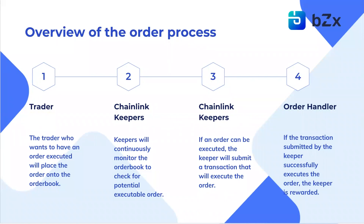At every single order, if one of them is up for execution, the keeper will submit a transaction that will execute the order to the execute order function. And the fourth step is: if the keeper successfully executes the order, the keeper is rewarded. This will be paid out in LINK, as that's what Chainlink Keeper jobs use.